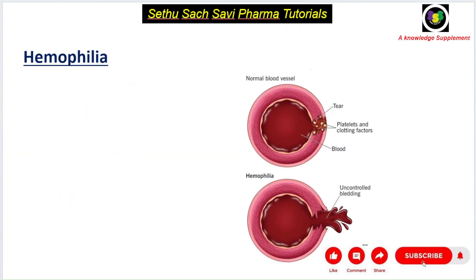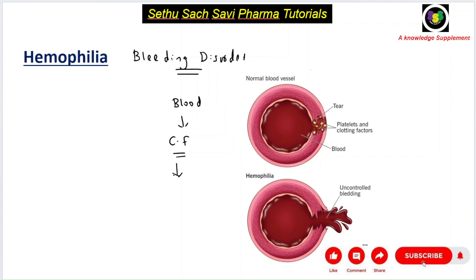Hemophilia, as you all know, is a bleeding disorder. Blood contains clotting factors, and the function of these clotting factors is to help the blood clot. Whenever there is a rupture or bleeding, it has to stop, otherwise it can lead to even death. So clotting must happen, and clotting factors help in that process.